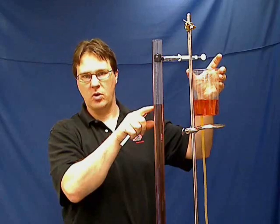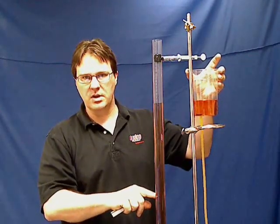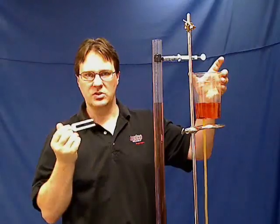The first node will give you one-quarter wavelength. If you find a second node, that will give you half the wavelength of the tuning fork.